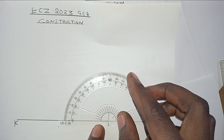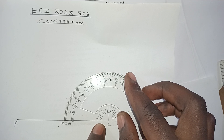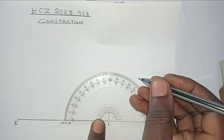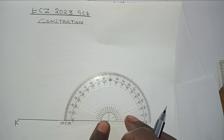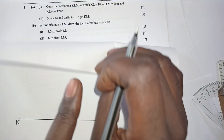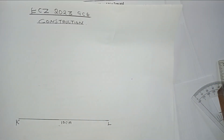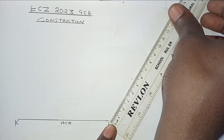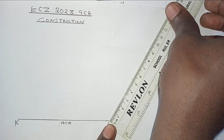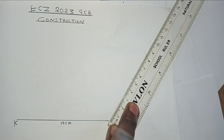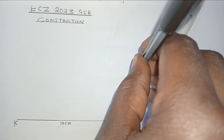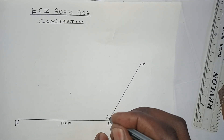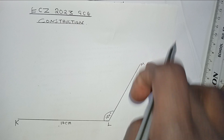From there, measure the degrees starting from 0. My 0 is at this point, going forward up to where 120 degrees is. Make a small mark indicating where line LM will pass. Then get your ruler and measure 7 centimeters from L through where the angle is marked. That gives you LM at 7 centimeters and angle KLM at 120 degrees.